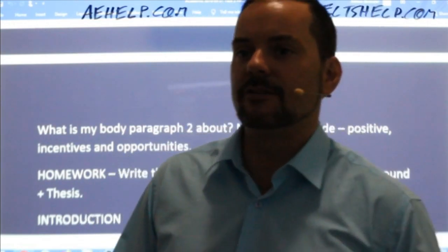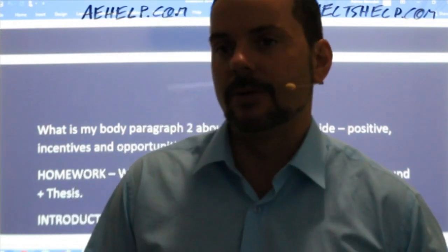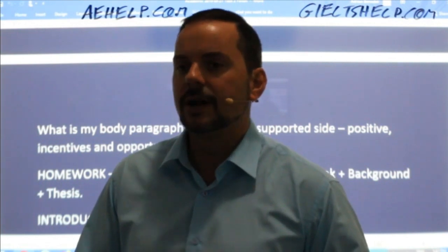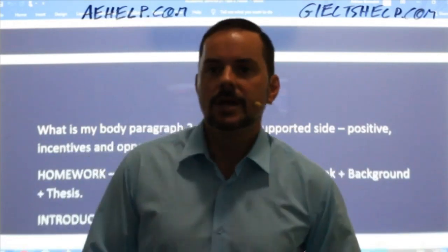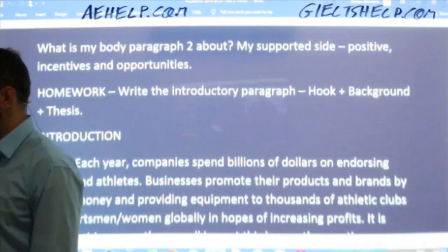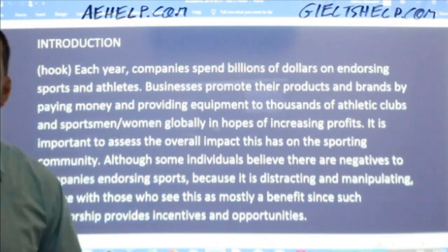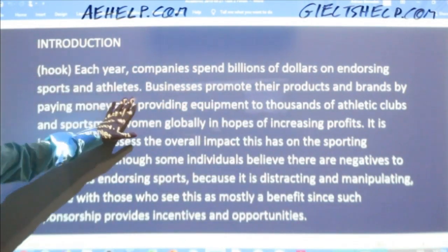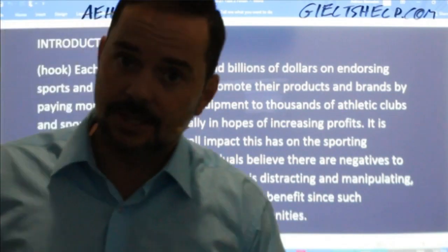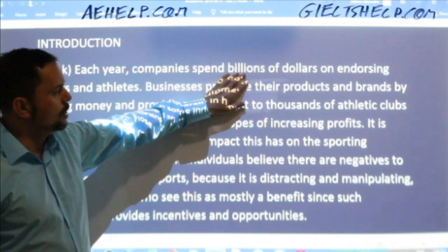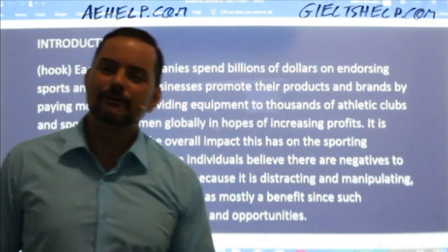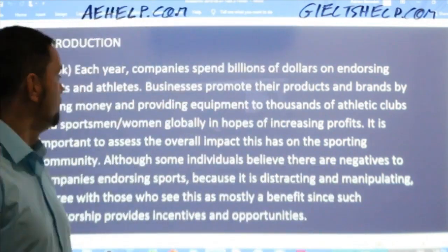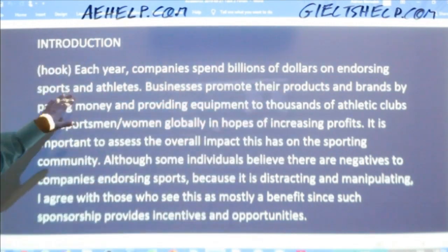Preeti says: 'The endorsement is a good way of promotion for sports companies.' It's grammatically a little bit incorrect — rearranged, it would be 'Sports endorsements are a good way to promote companies.' Here is my hook: 'Each year companies spend billions of dollars on endorsing sports and athletes.' Again, it's quite simple and quantitative. Quantitative hooks are quite good — if you can put a number in like billions of dollars, it's powerful because people pay attention to money, especially when the word billions comes into play.